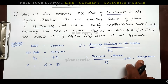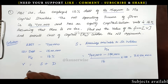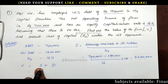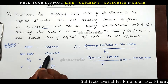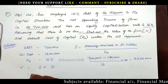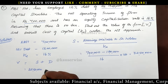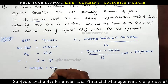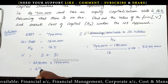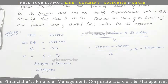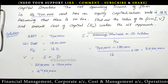After finding S we can now find the value of the firm. Market value of the firm equals market value of shares plus market value of debt. Debt is given in the problem as ₹15 lakhs. So V = ₹32,50,000 + ₹15,00,000 = ₹47,50,000. We have obtained the total value of the firm as ₹47,50,000.